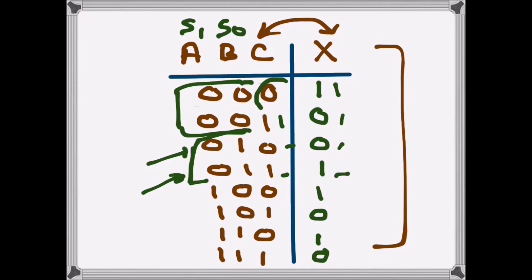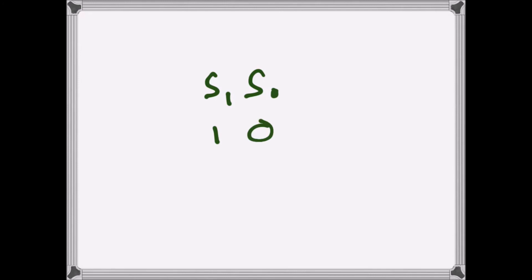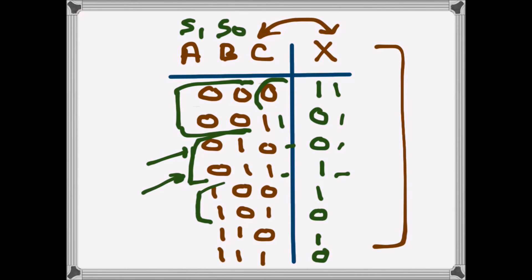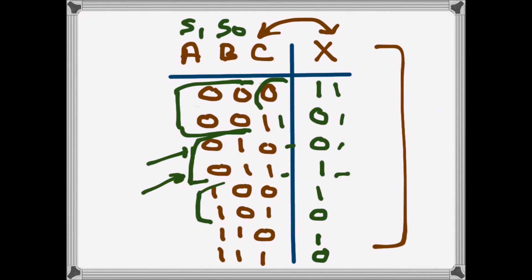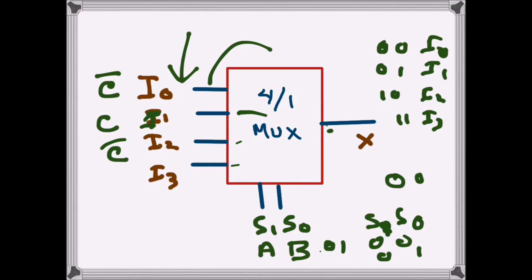Now for the third condition: when S1 S0 is 1 0, that means A is 1 and B is 0, so I2 is selected and goes to the output. Looking at how C and X are related: when C is 0, X is 1, and when C is 1, X is 0 — it is again inverting. So we write C-bar at I2.